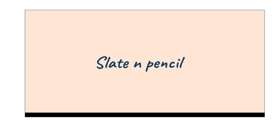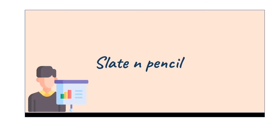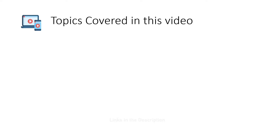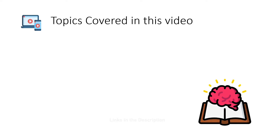Hello and welcome to Slate and Pencil, an initiative of Sanskar Bharti Public School. In this video lecture we will be discussing Class 7 Geography Chapter 3, which is 'Our Changing Earth.' This video lecture is divided into different subtopics. If you want to go to a specific one, check the links in the description below.